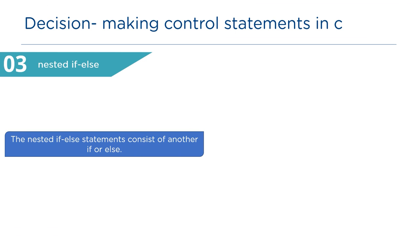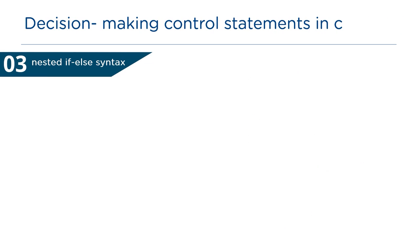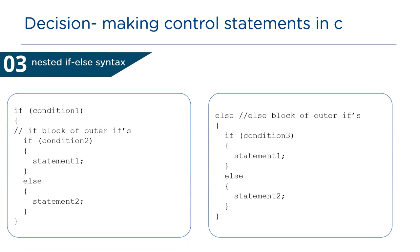Next we have nested if-else statement. Nested if-else statements consist of another if or else inside the outer blocks. Looking at the syntax, this consists of another if-else statement inside the outer if block, and another if-else inside the outer else block. Let's understand by an example.